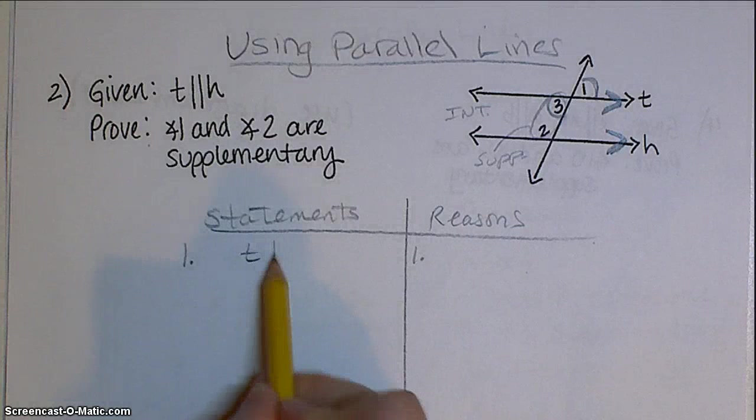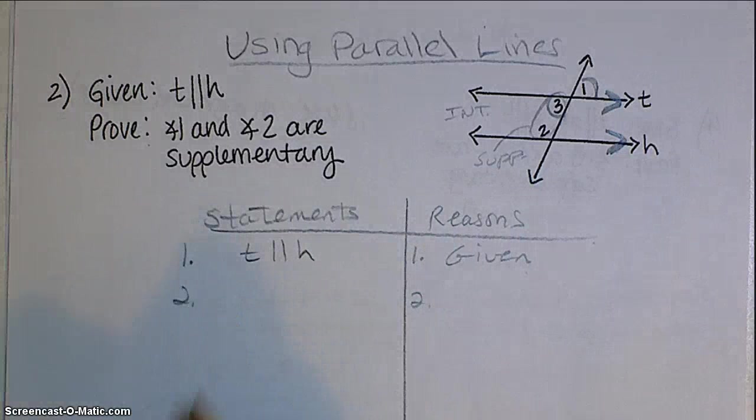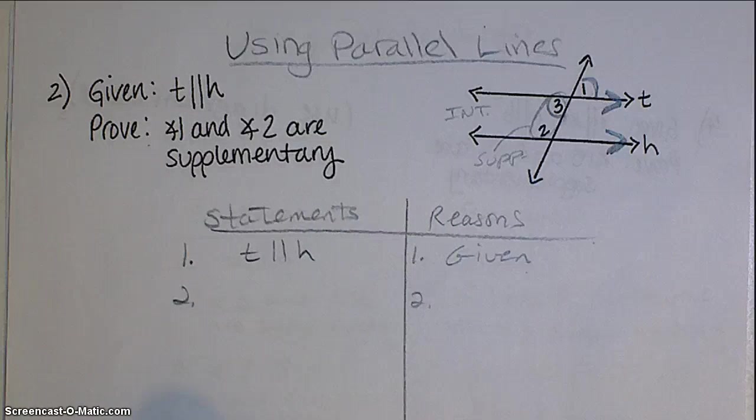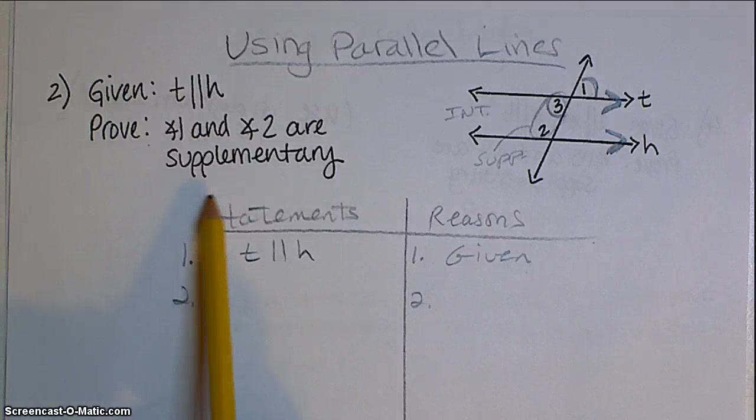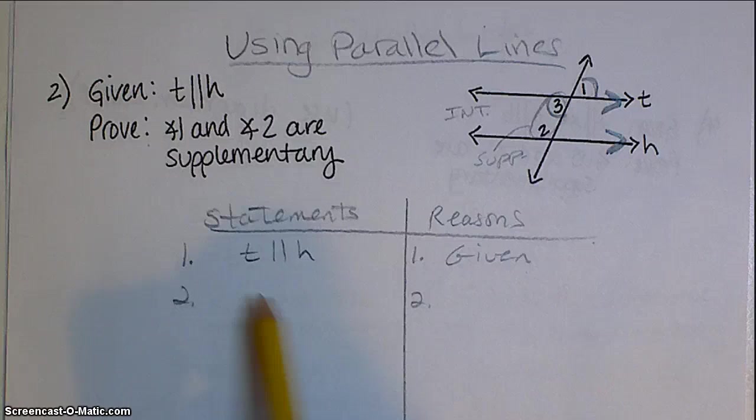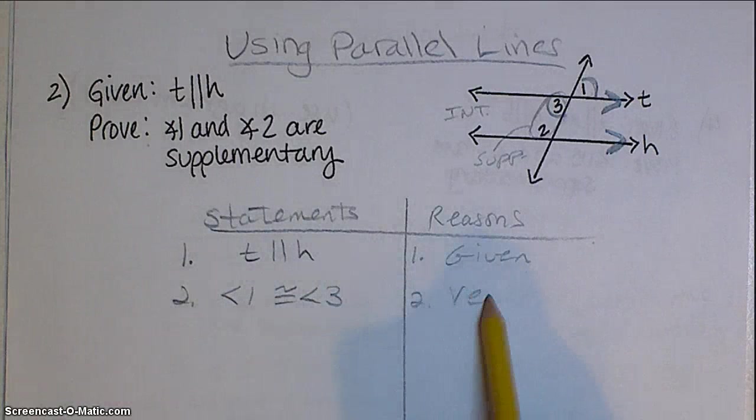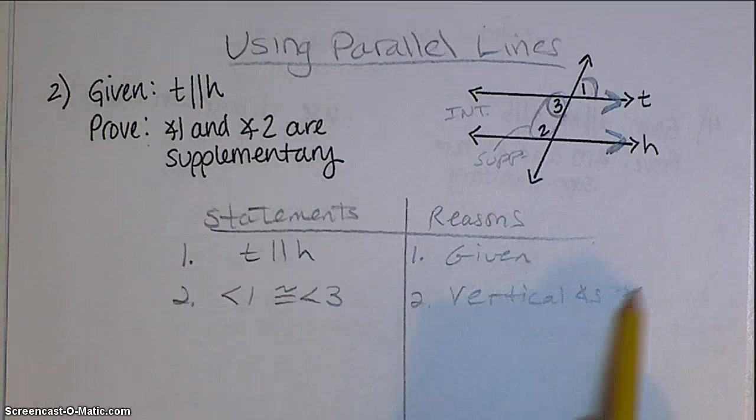So we always start with the given, that's the easiest one. And then I would start putting your statements in any logical order that you can see. So I would start with 1 and 3 are congruent, because that was the easiest one for me. The reason, vertical angles congruent.